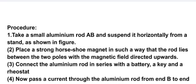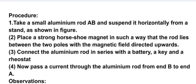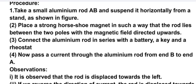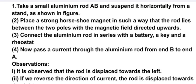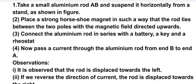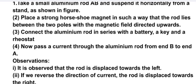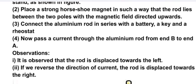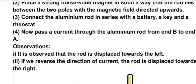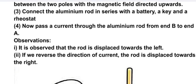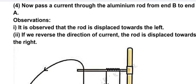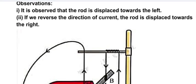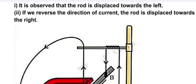Procedure: take a small aluminum rod AB and suspend it horizontally from a stand as shown in figure. Place a strong horseshoe magnet in such a way that the rod lies between the two poles with the magnetic field directed upwards. Connect the aluminum rod in series with a battery, a key, and a rheostat. Now pass a current through the aluminum rod from end B to end A. Observations: it is observed that the rod is displaced towards the left. Number two, if we reverse the direction of current, the rod is displaced towards the right.